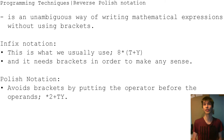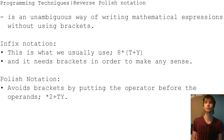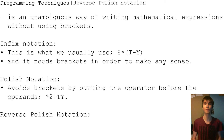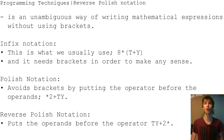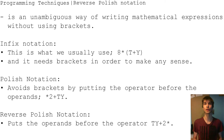In Polish notation it would be: times, then 2, plus, t, y. Reverse Polish Notation puts the operands before the operators, so it would be: t, y, plus, 2, times.